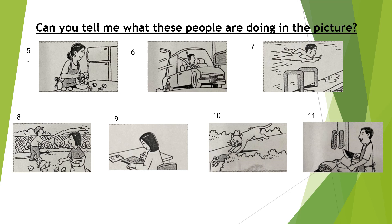Number eight — there are two verbs. Two people are doing different things. The girl is doing one action — that is a verb. The boy is doing another action — that is also a verb. So you can write two verbs for number eight.